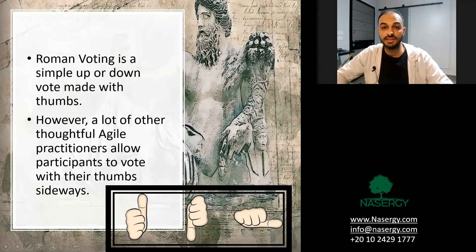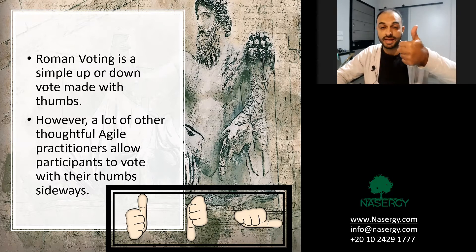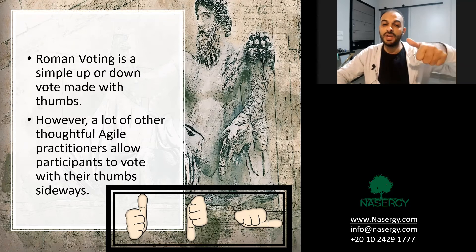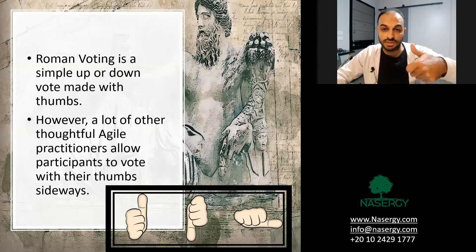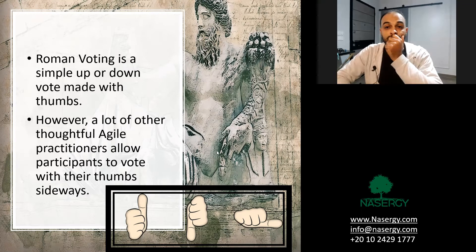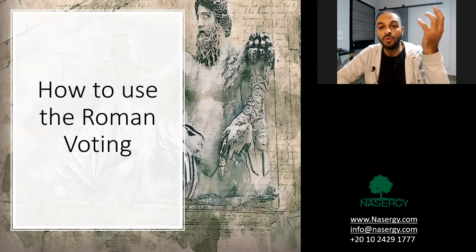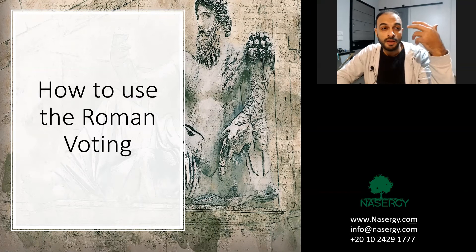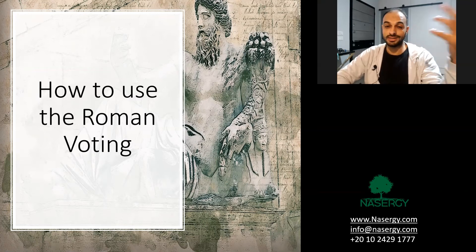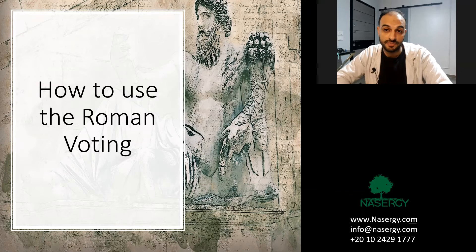Roman Voting is a methodology to make a voting decision. It's a very simple way to vote: either yes, I agree; no, I disagree; I need time to think; I don't understand; or I have questions. It's simple, but very important and a very direct way to know the result about some idea or decision.